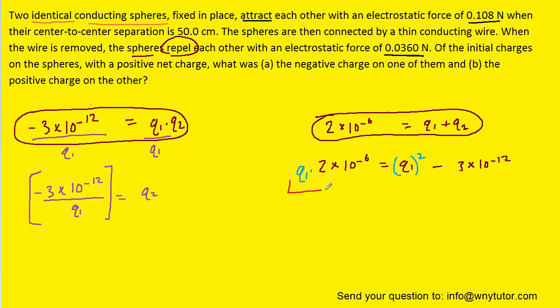We're going to go ahead and take this term and subtract it over to the other side, so that the left side just becomes 0. Now we'll notice that we have ourselves a quadratic equation where the variable is q1. In this case, the a will be 1, and the b will be this term right here, and the c will be this term here. So we will have to use the quadratic formula to solve for q1.